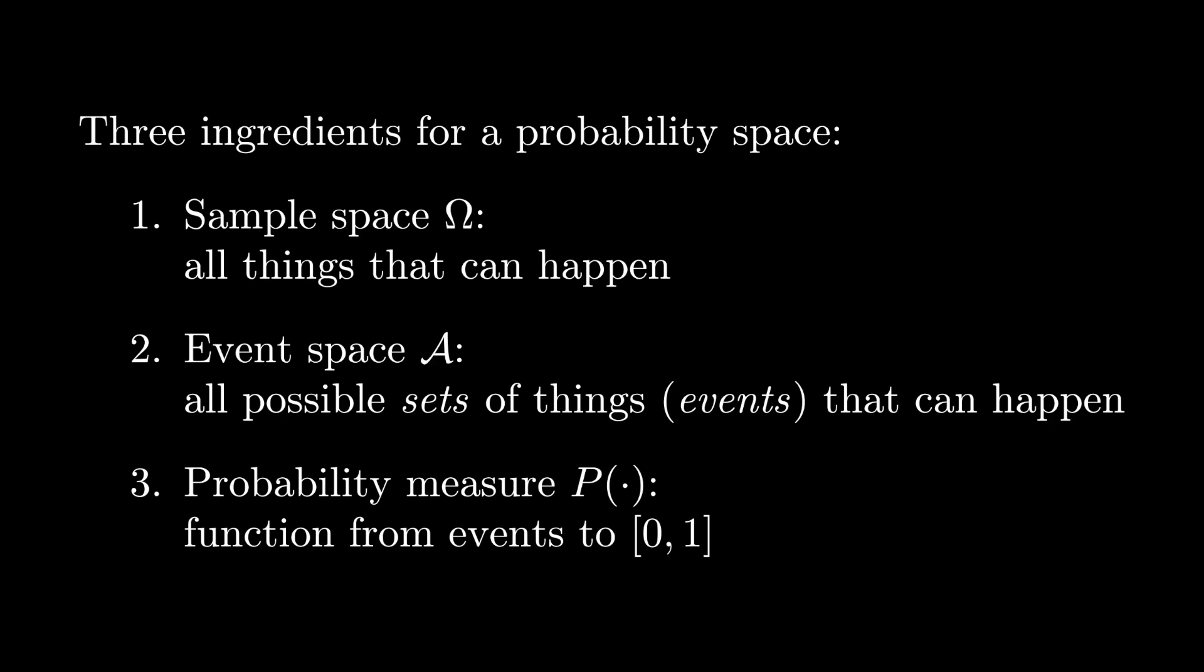The final ingredient is what we call a probability measure, and it's a function that takes members of the event space A and turns those into numbers between 0 and 1 that we interpret as probabilities.